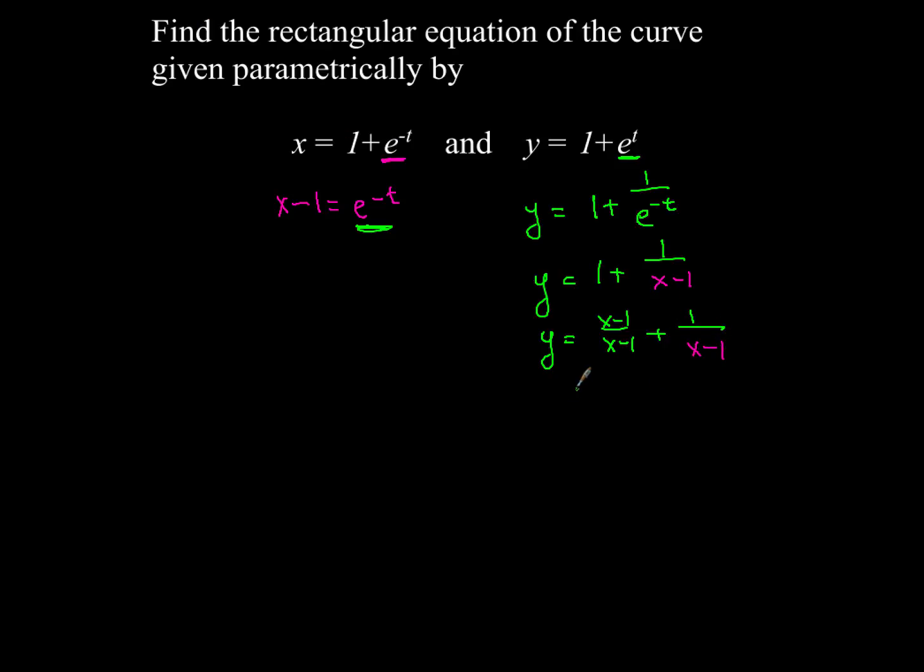So from here all you need to do is make sure your arithmetic is good. In the numerator you have x minus 1 and then you have a plus 1, so of course that will just give you x in the numerator and your denominator is going to be x minus 1. So that is the value for your y equation given rectangularly.